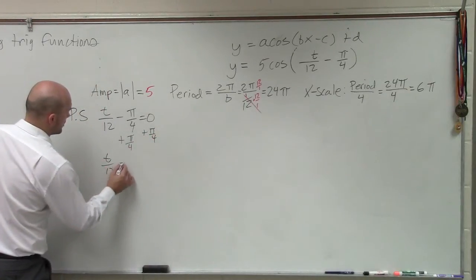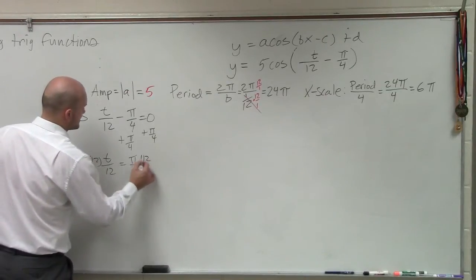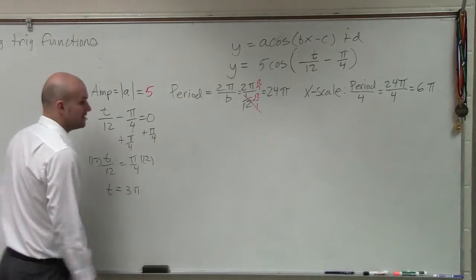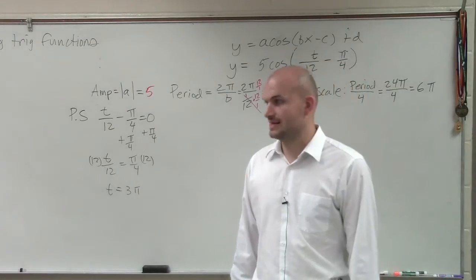Therefore, you have t over 12 equals π over 4. Multiply 12 on both sides. t equals 3π. So that means my phase shift is 3π.